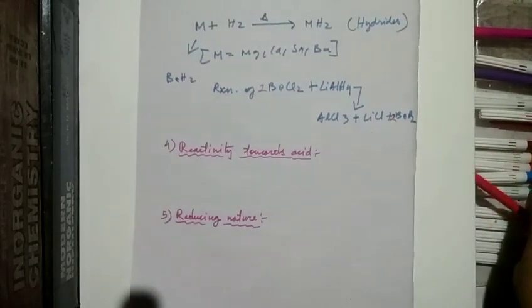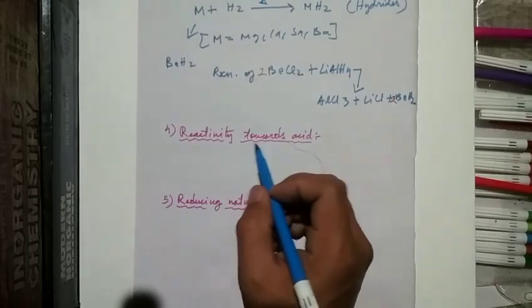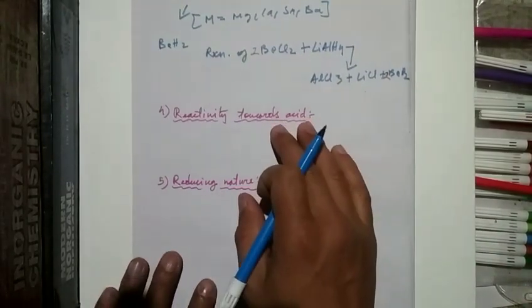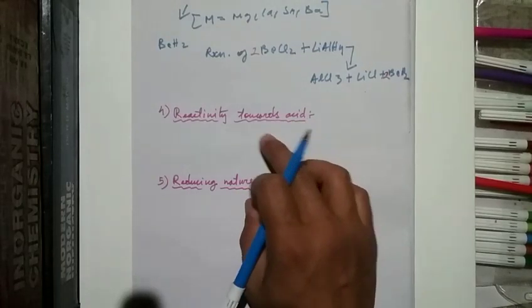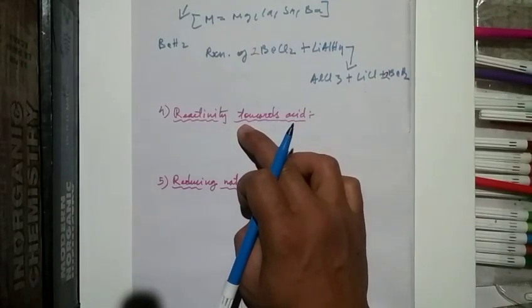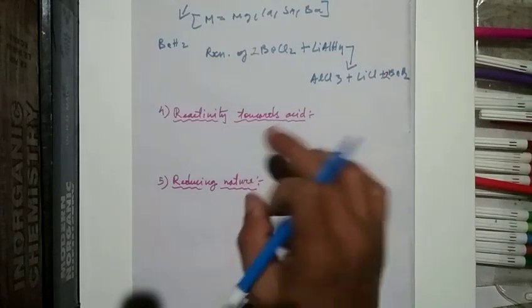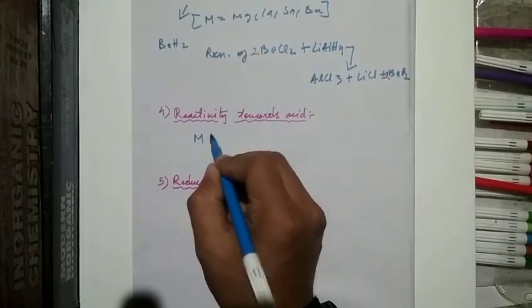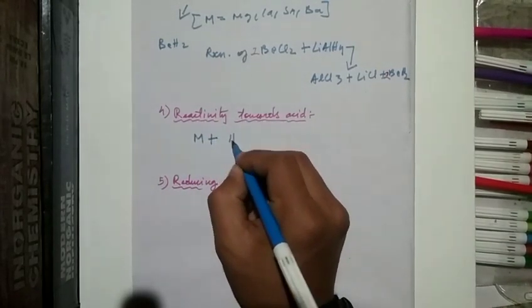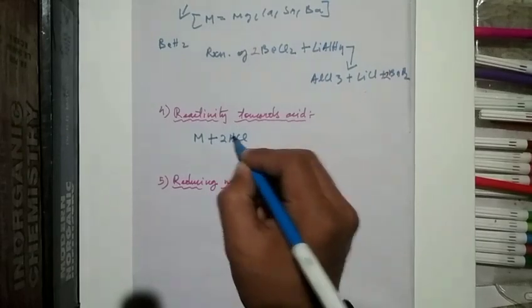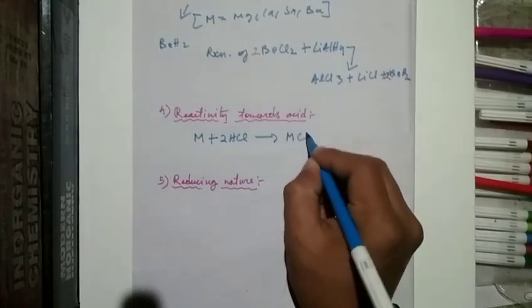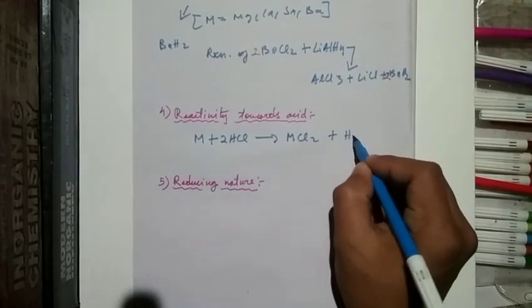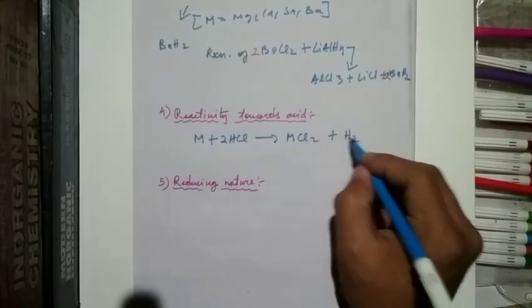Next is reactivity towards acids. These alkaline earth metals react with acids and liberate dihydrogen: M + HCl → MCl₂ (metal salt) + H₂.